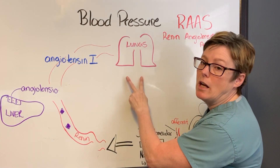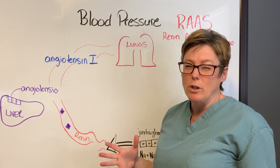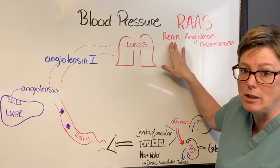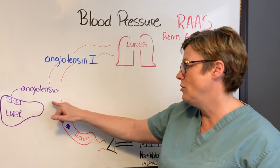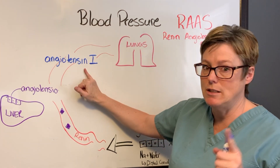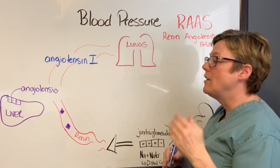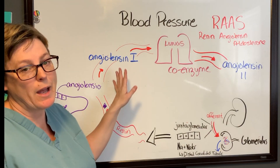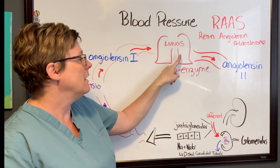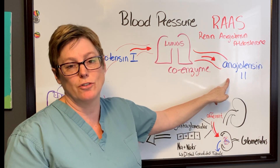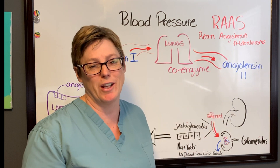Angiotensin 1 then travels to the lungs where it is transformed into angiotensin 2. The way I remember the different organs involved: renin starts in the kidney; the liver — there's one liver — gives me angiotensinogen that meets up with renin and becomes angiotensin 1; I have two lungs, and this is where the chemical change occurs to give me angiotensin 2. Activation of angiotensin 1 occurs in the lungs where a coenzyme in the capillary beds converts it to angiotensin 2. Angiotensin 2 is what does the work — this is the workhorse.